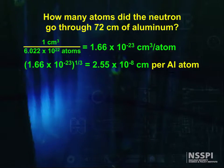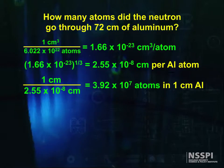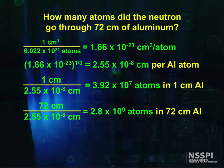Let's let the atoms be contained inside of cubes so the diameter of a single aluminum atom is the cube root of this number, or 2.55 times 10 to the minus 8th. If we lined all these atoms up, then a neutron would pass through 3.92 times 10 to the 7th atoms per centimeter, or about 2.8 billion atoms in 72 centimeters.